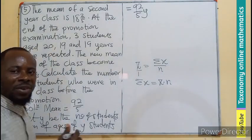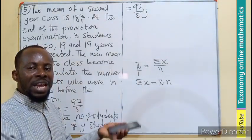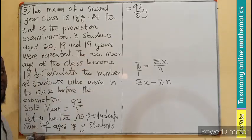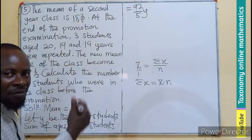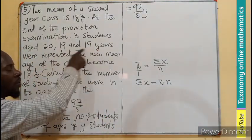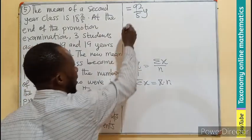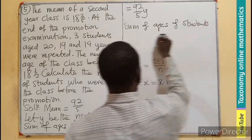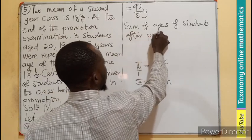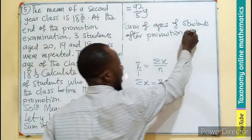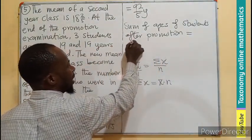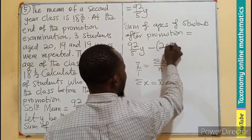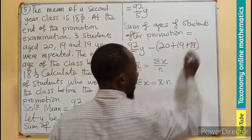The next thing to do is to find the sum of ages of the students after promotion. We can find that by taking away the 3 people that have been repeated. The sum of ages of students after promotion will be 92 out of 5Y minus the addition of 20, 19, and 19.